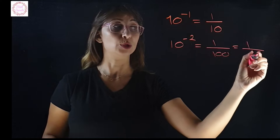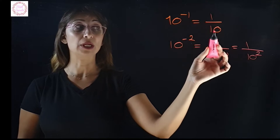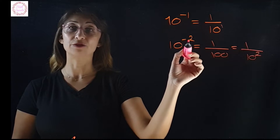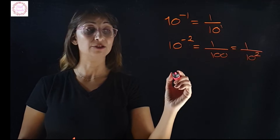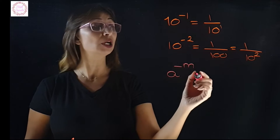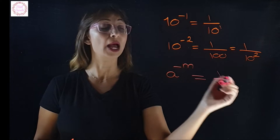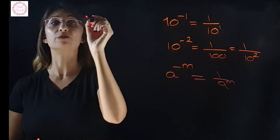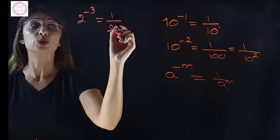That is 1 over 10 power 2. So if you notice, when we have a negative power, we flip the base upside down and the power becomes positive. The rule says: if we have a to the power of negative m, we flip a upside down and put m as a positive exponent. For example, 2 to the power of negative 3 becomes 1 over 2 power 3, which is 1 over 8.